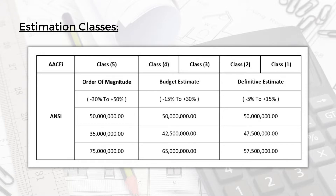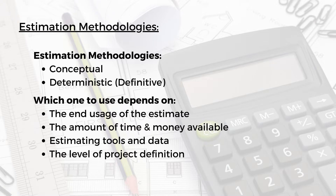This is how the AACEI and the ANSI classify the estimation classes. When we come to estimation methodologies, we have two: the conceptual methodology and the deterministic or definitive methodology. When to use the conceptual and when to use the deterministic depends on the end usage of the estimate — is it just screening or feasibility, or is it a bid or tender?